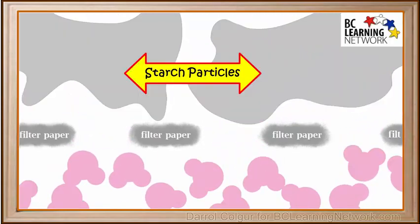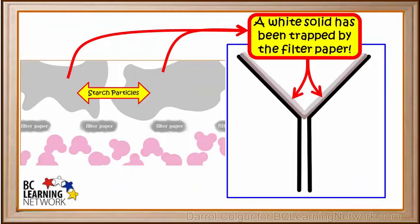We see the water easily passes through, but the starch particles cannot make it through the holes. After a time, all of the water has passed through the filter. But the solid starch particles that were too large to get through the holes have stayed on top of the filter. These starch particles that couldn't get through the filter form the white solid that we saw on the top of the filter paper.